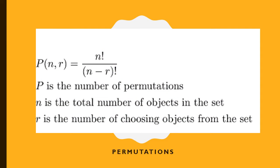Here, the permutation formula P(n, r) is equal to n factorial divided by (n minus r) factorial. P denotes the number of arrangements or number of permutations. n is the total number of objects in the set, and r is the number of objects chosen from the set of n objects.